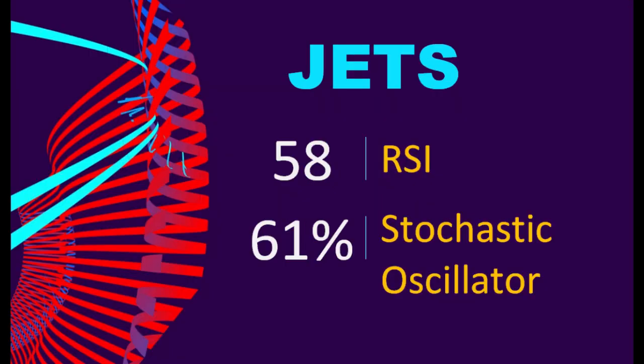4. JETS. What technical signals should you watch for when analyzing JETS? Technical Signals and Analysis. JETS's 14-Day Relative Strength Index (RSI) value was 58. When the RSI is between 50 and 70, it generally indicates that the stock is moderately bullish. This means that the securities price has been rising but has not yet reached overbought levels, which are usually considered an RSI reading of 75 or higher.